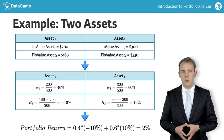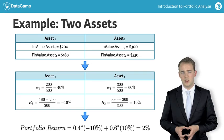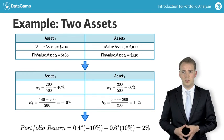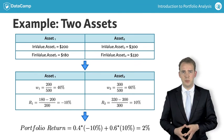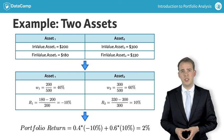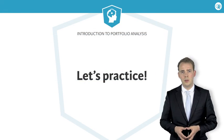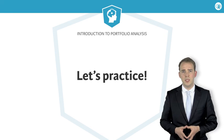The first term is the weight of 40% times the return of minus 10%, which gives us minus 4%. The second term is the weight of asset 2, 60%, times its return of 10%, which gives us plus 6%. Adding minus 4% and plus 6% gives us the portfolio return of plus 2%, which is exactly the same number as obtained before. The next interactive exercises put this theory in practice.